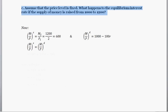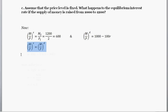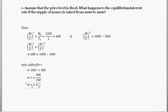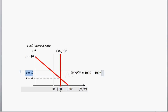Part C: assume the price level is fixed at 2. What happens to the equilibrium interest rate if the money supply is raised from 1,000 to 1,200? The new real money supply is 1,200 divided by 2, which equals 600. Setting 600 equal to money demand (1,000 minus 100R) and solving for R, we find the new real interest rate is 4%. So the shift out in money supply from 500 to 600 lowers the real interest rate from 5% to 4%.